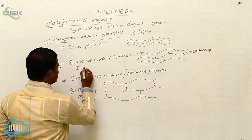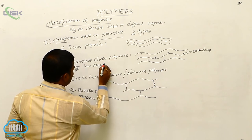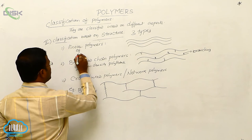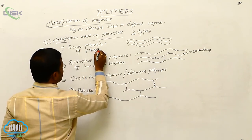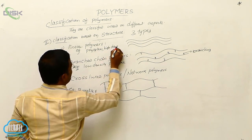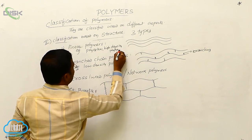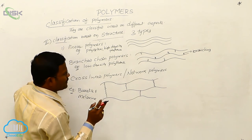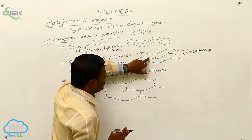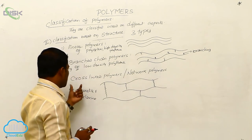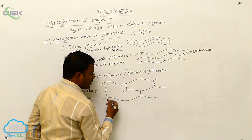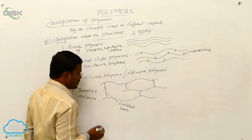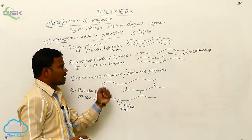An example for branched chain polymers is low-density polythene. For linear polymers, examples are polyesters and high-density polythene — there is no branching in the chain. In cross-linked polymers, among the chains there is a strong covalent type of binding interaction, and the resulting polymers are called cross-linked or network polymers.